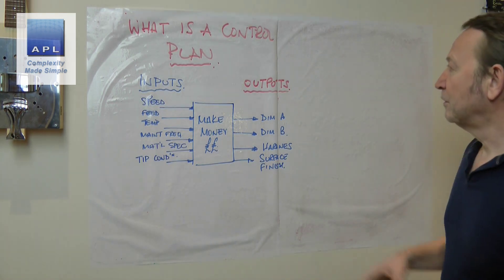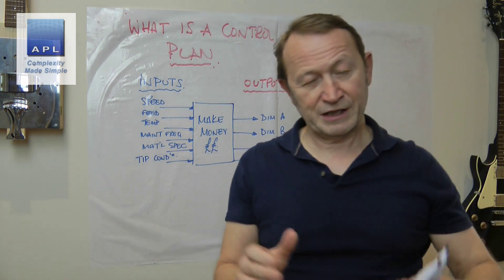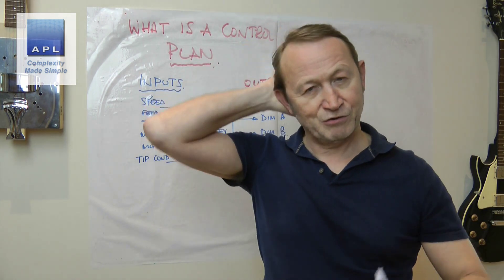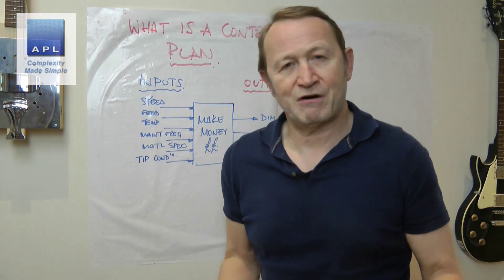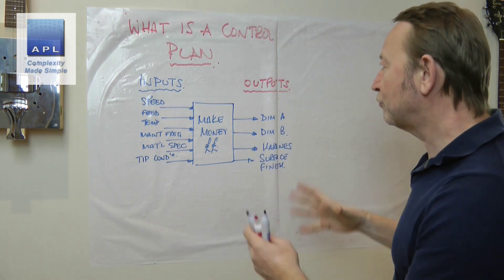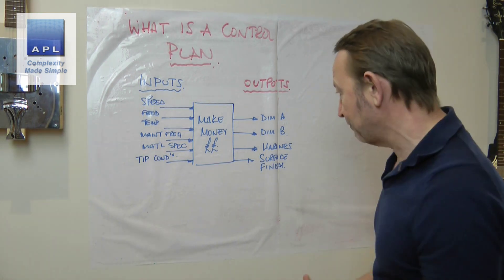And on this side of course you've got the things that the customer is interested in. You've got outputs. The outputs typically are things like their tolerances, you know, dimension A, dimension B.